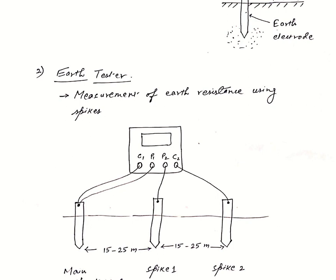The earth tester has four terminals on it: C1, P1, P2, and C2. C1 and P1 are shorted as you can see here, these two are shorted and connected to the earth electrode for which we want to measure the earth resistance. P2 is connected to the first spike S1 and C2 is connected to second spike S2.